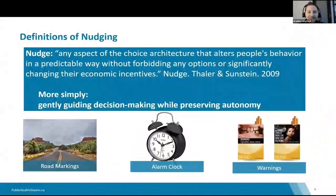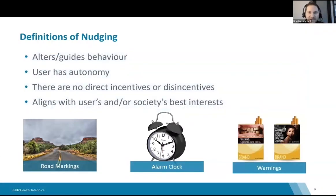Nudging is any aspect of the choice architecture — the way choices are laid out — that alters a person's behavior in a predictable way without forbidding any options or significantly changing their incentives. More simply, nudging is to gently guide decision-making while preserving that person's autonomy. Examples from daily life include road markings, alarm clocks, and warnings on cigarette packages. These guide your behavior and align with your best interest, while you still have autonomy — you could still snooze that alarm or smoke that cigarette, with no direct incentives or disincentives.